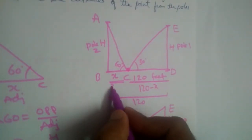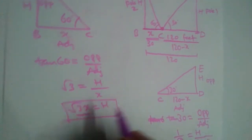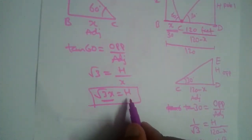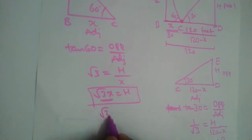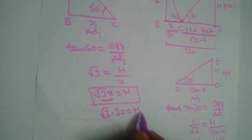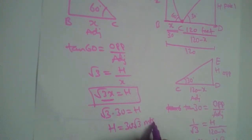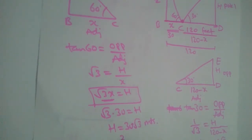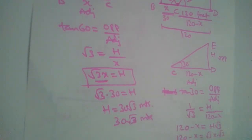So BC is 30. Now let us find the height of the poles. Height H equals X√3, and substituting X equals 30 gives H equals 30√3. So the height of both poles is 30√3 meters.